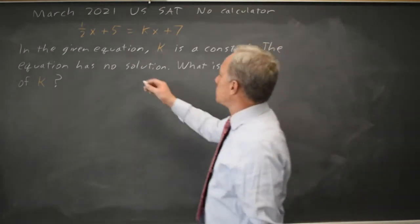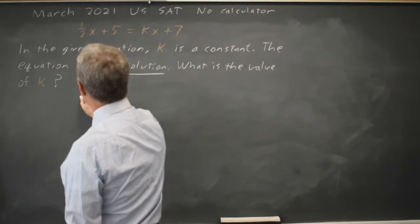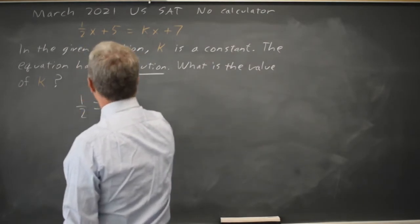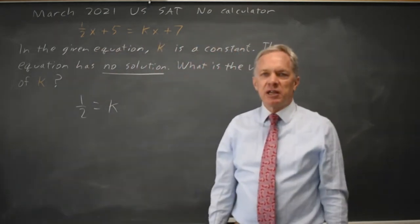So when they say no solution, that means the slopes are the same. The slope on the left is 1 half, the slope on the right is k. So there will be no solution when k equals 1 half.